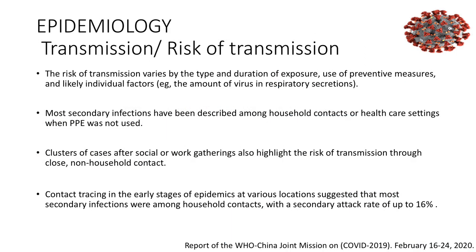The risk of transmission varies by the type and duration of exposure and the use of preventive measures. Most secondary infections have been described among household contacts or in healthcare settings. Clusters of cases also occurred after social or work gatherings. Contact tracing in the early stages of the epidemic suggested most secondary infections were household contacts with a secondary attack rate of up to 16 persons, explaining why mitigation and restriction measures are very important.